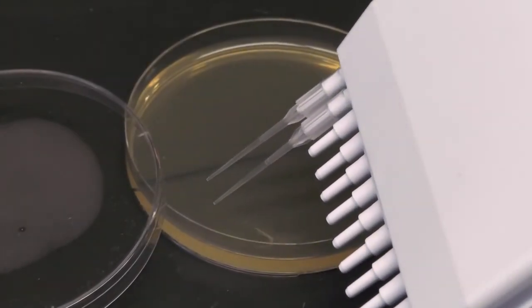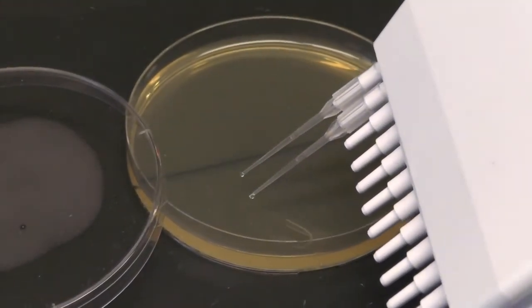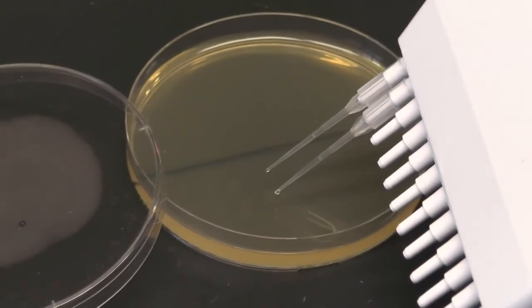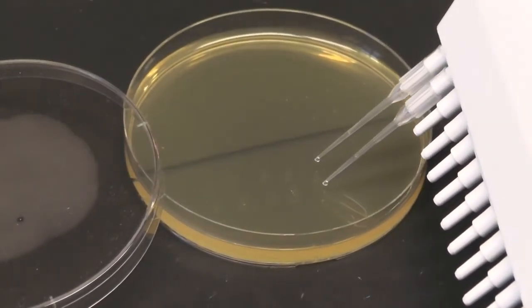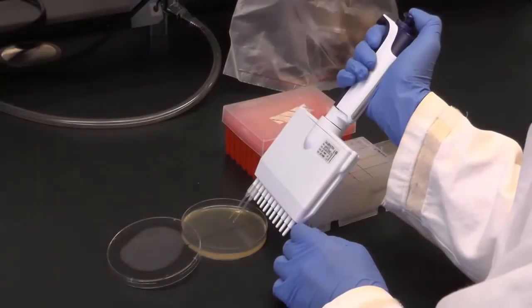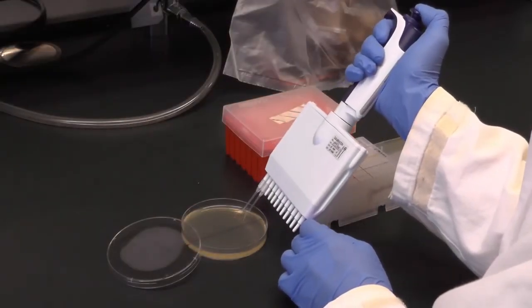With the tips touching the agar slightly, press the plunger button lightly to release small droplets of sample onto one half of the agar plate. Continue dispensing in a straight line until the 10 microliters of sample is all plated.